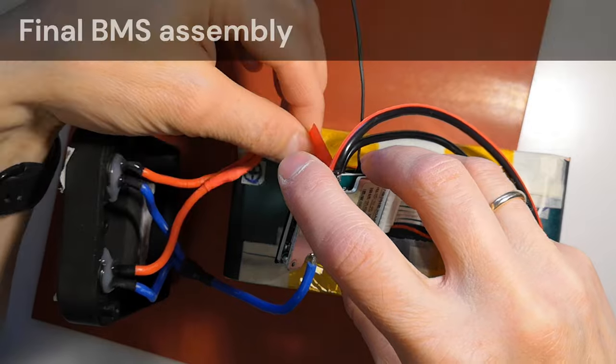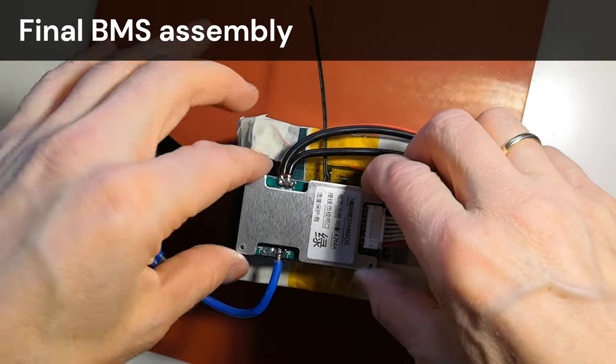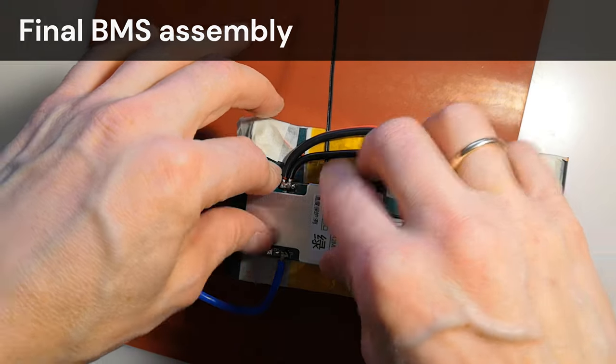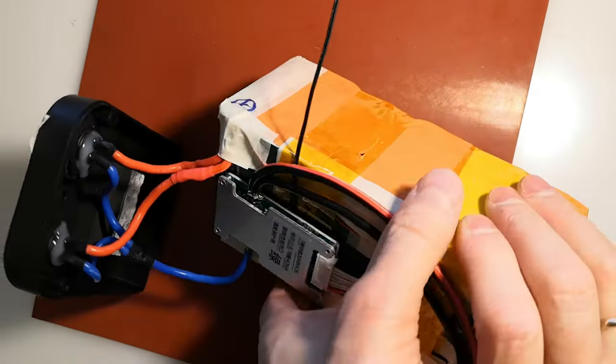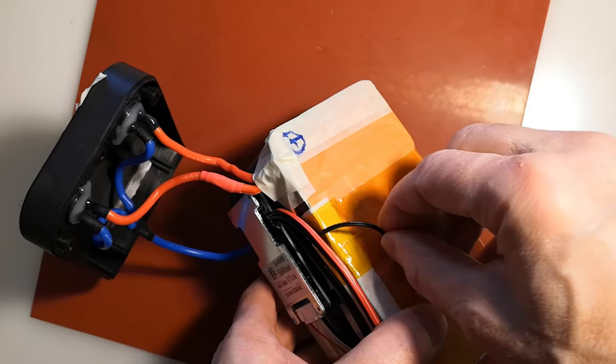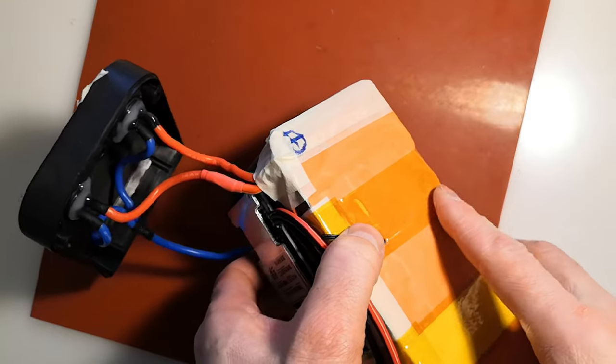Now it's time to attach the module. I can't place it in the center as initially planned because the positive wires take up more space than I thought. It's a good thing I left the attachment until the end. I'll poke a small hole for the temperature sensor and thread it into the center of the battery pack. The previous module didn't have a temperature sensor, so this module is probably of higher quality.